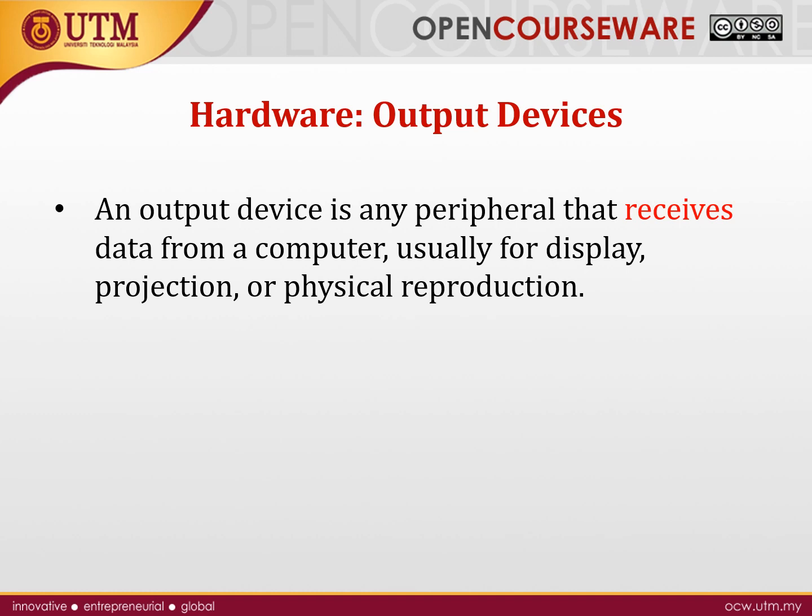The second category of hardware is output devices. Output devices have an important function: to receive data from the computer and make it human-readable — whether to display it on a projector, or through speakers so we can listen to music. Printers are another example, allowing us to print documents, producing a physical reproduction that can be seen and touched. That is the main purpose of output devices.